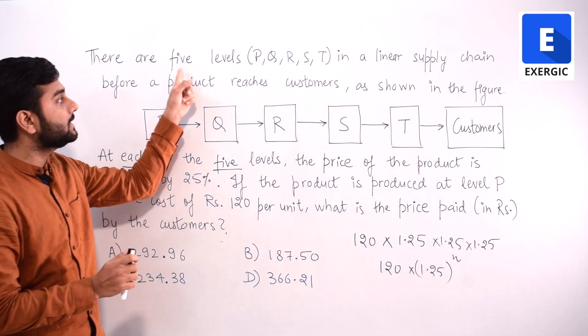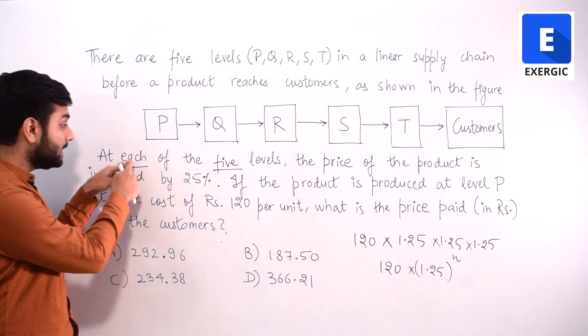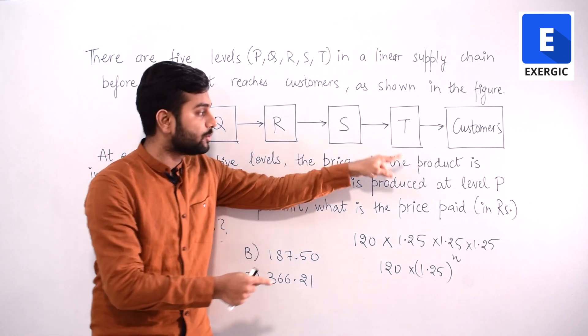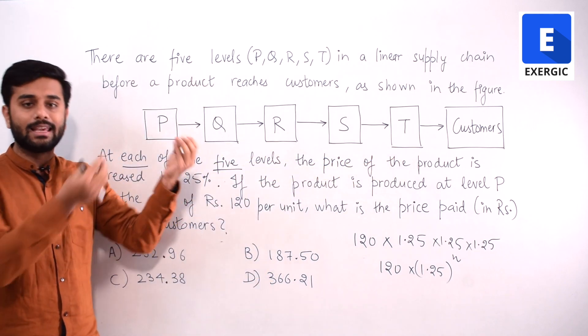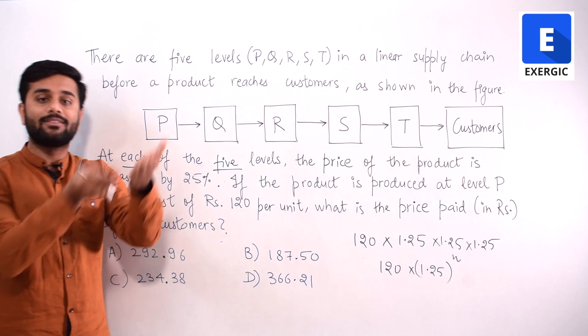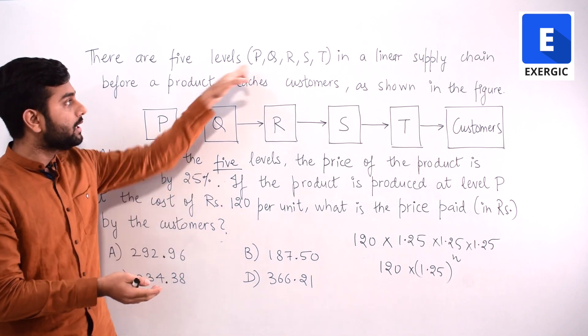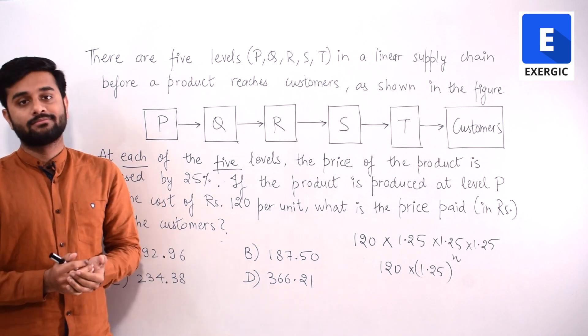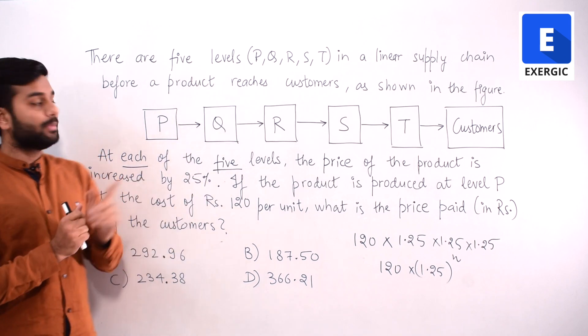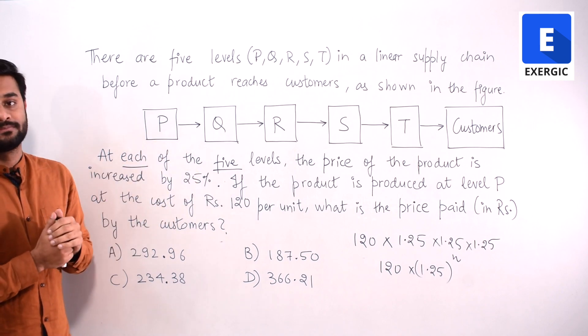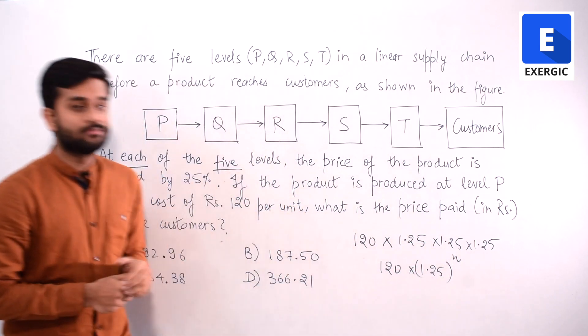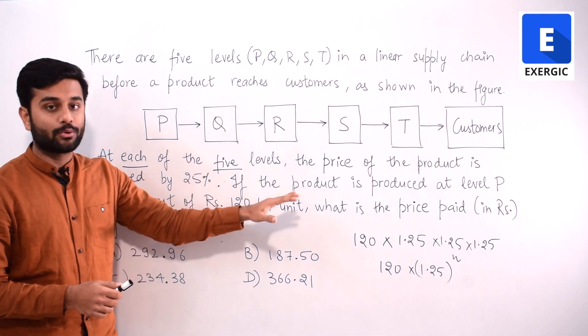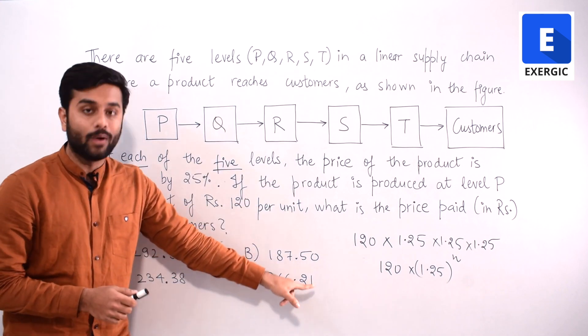The question has said that there are 5 levels and at each of the 5 levels price of the product is increased. It has clearly said that at each 5 level price is increasing. P is a level. So why will price not increase at P? Clearly the language is telling that at P also price will increase. So value of N will be 5. Answer from this approach will be 366.21.